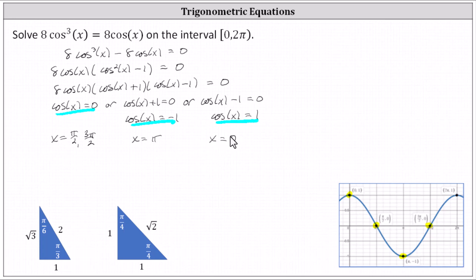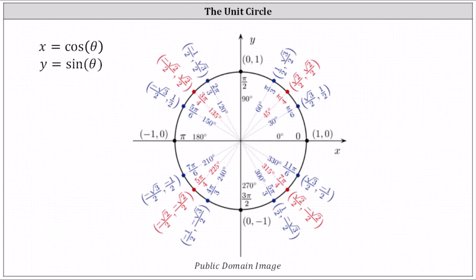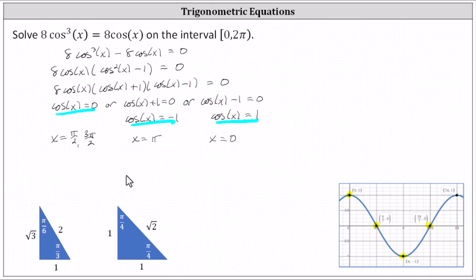Another way to find the solutions would be to use the unit circle. Recall that on the unit circle, x equals cosine theta. The cosine function value is zero at pi divided by two radians, as well as three pi divided by two radians. The cosine function value is negative one at pi radians, and positive one at zero radians — the same four solutions. Giving these solutions in order from least to greatest, we have x equals zero radians, or x equals pi divided by two radians, or x equals pi radians, or x equals three pi divided by two radians.